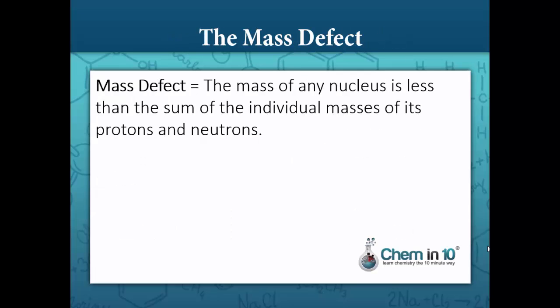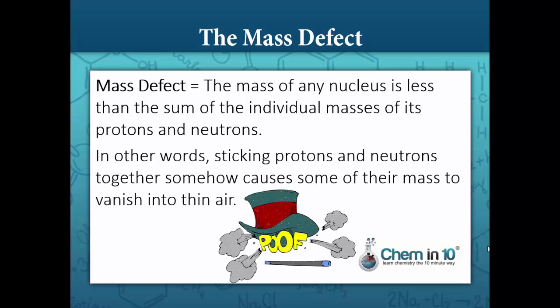The mass defect refers to the phenomenon that the mass of any nucleus is less than the sum of the individual masses of its protons and neutrons. In other words, sticking protons and neutrons together somehow causes some of their mass to vanish into thin air.